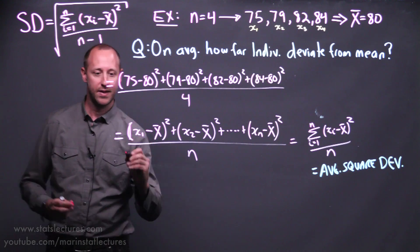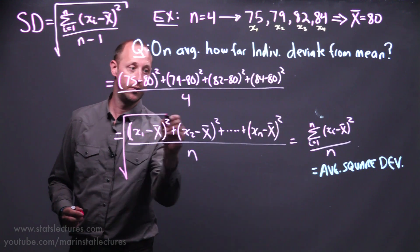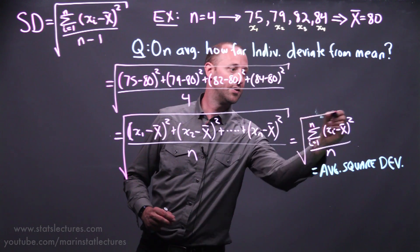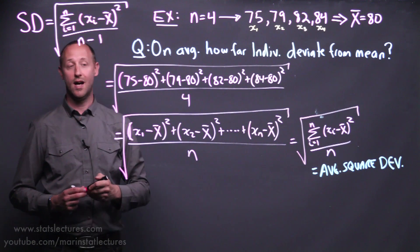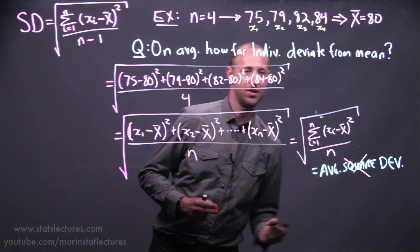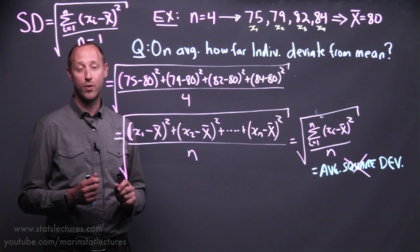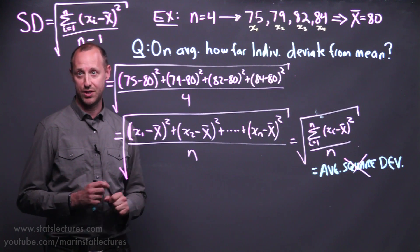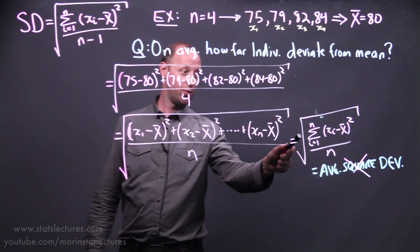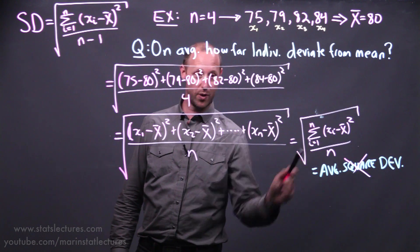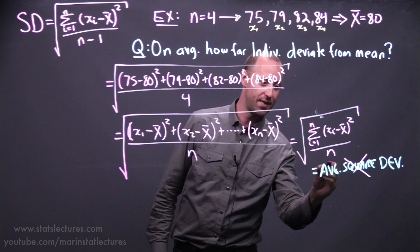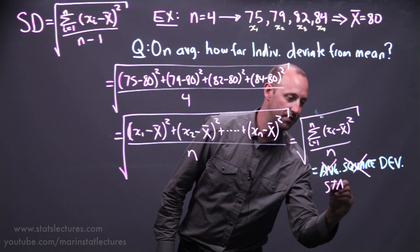One way we can do that is we can take the square root. So taking the square root of this is going to get us back to units of x, or percentages. So that's helped us get rid of the square. So this standard deviation we can think of as being the average deviation. Mathematically, it's not quite that. It's actually the square root of the average squared deviation. So rather than call it the average deviation, because it's not quite that mathematically, we call it the standard deviation.